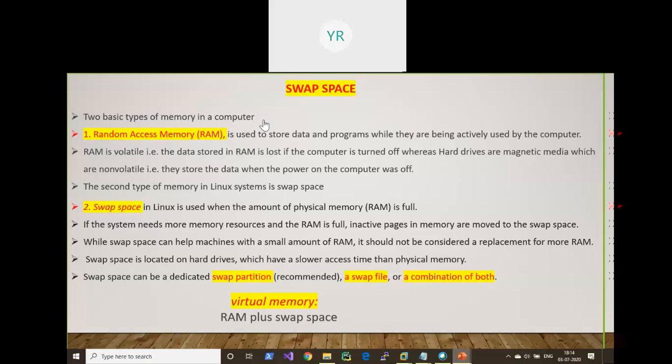The first type is RAM — random access memory. The purpose of RAM is to store data and programs while they are being actively used by the computer. Generally, data is stored on the hard drive, but if the CPU wants to access data from the hard drive it is very slow. So, active data is first loaded into RAM so the CPU can access it quickly, because RAM is faster compared to the hard drive.